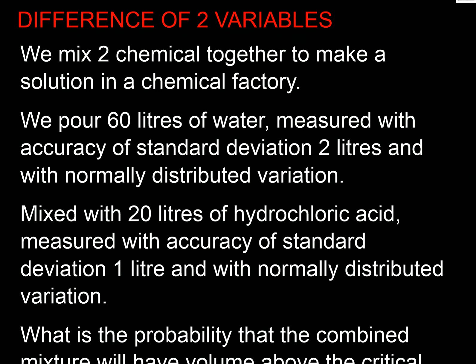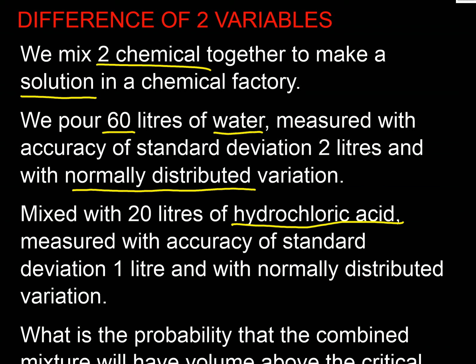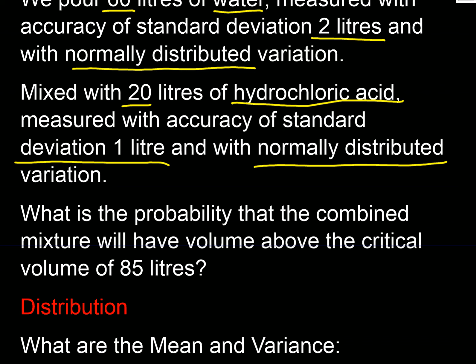Let's start with the chemicals example. We want to make a solution by mixing water and hydrochloric acid in a chemical factory. We want 60 liters of water — normally distributed with a standard deviation of 2 liters — and 20 liters of hydrochloric acid — normally distributed with a standard deviation of 1 liter.